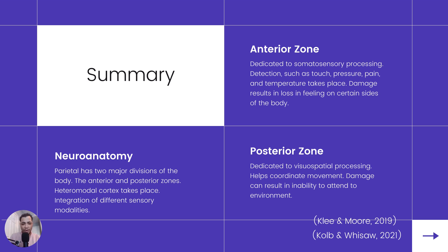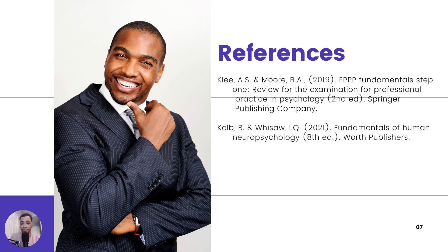So putting it back together — the neuroanatomy shows us that the parietal lobe is divided into two major areas: the anterior and the posterior zones. There's a heteromodal cortex that integrates different sensory modalities. The anterior zone is dedicated to somatosensory processing — so touch, pressure, and all that good stuff. And the posterior zone is dedicated to visuospatial processing, which helps with coordination and movement.